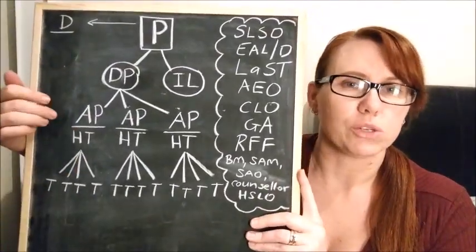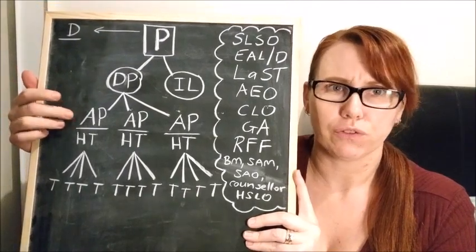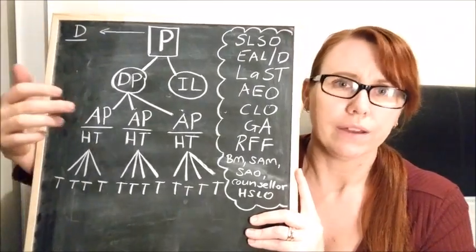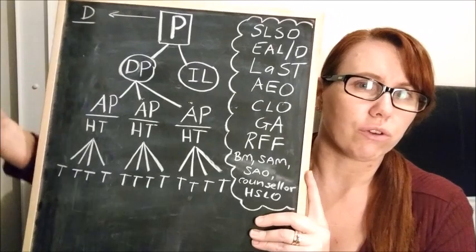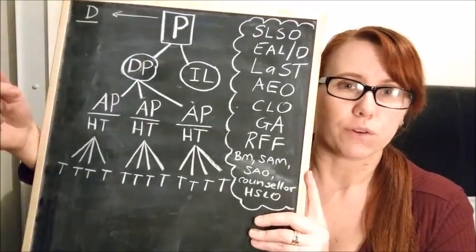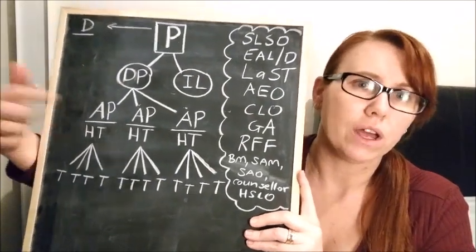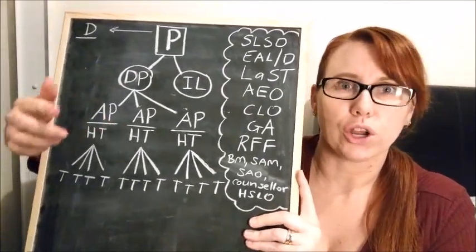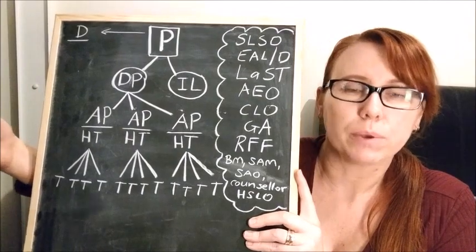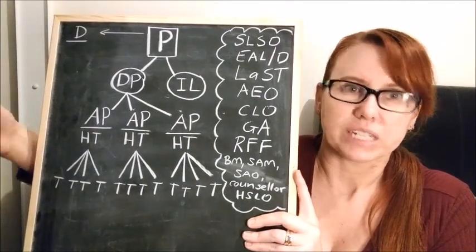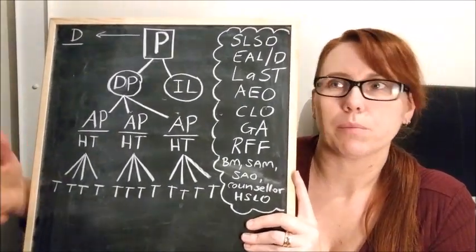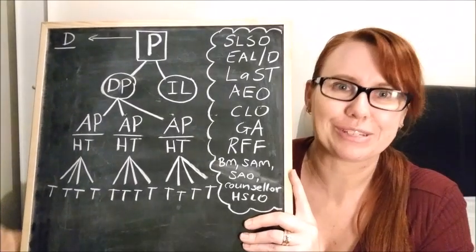The assistant principals are usually the supervisor for particular grades or stages. If it was three like this, you would probably have an assistant principal for early stage one and stage one, stage two, and then stage three. You could choose to break it up in different ways. One might have a complete focus on mentoring and instructional leadership, doing demo lessons. One might be completely behavior, depending on the school system that you're in.